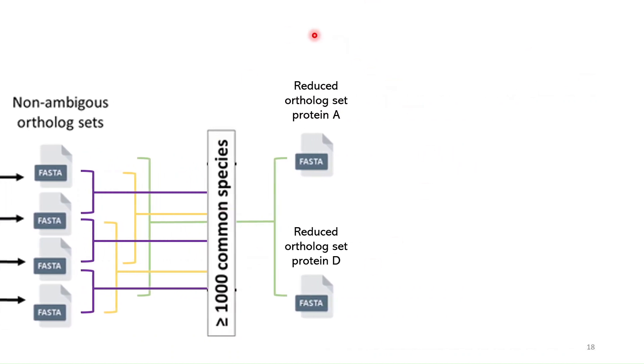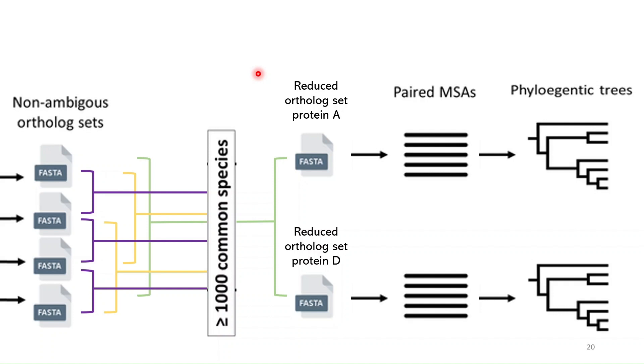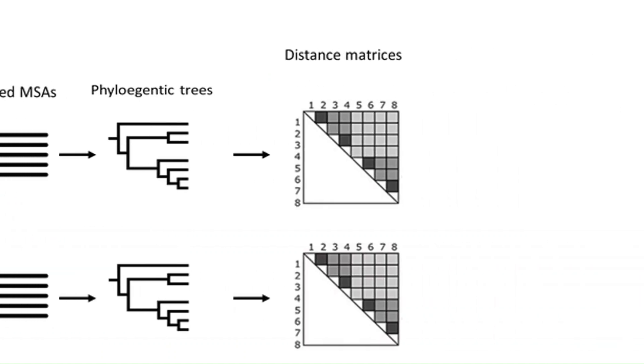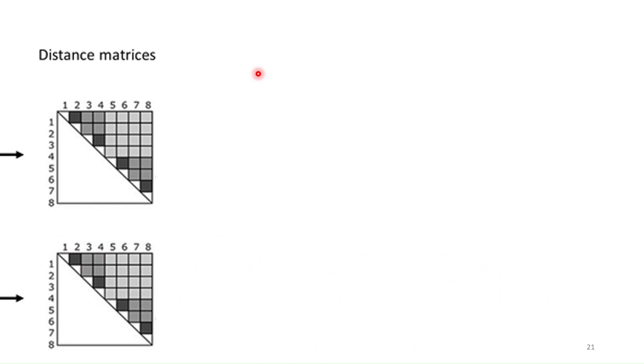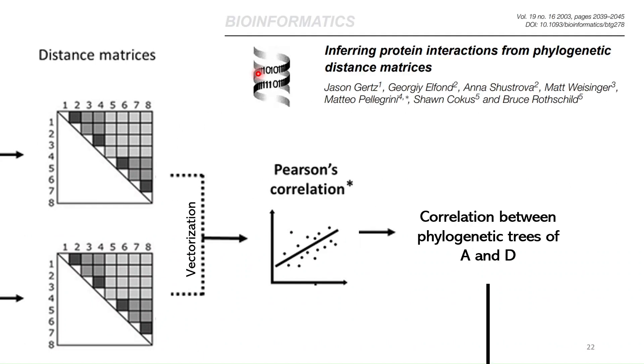So in this case we took these two proteins. They shared orthologs in this number of species, we reduce the ortholog sets, we align them and we build a phylogenetic tree out of it. The idea is that now we can make this phylogenetic tree into a distance matrix so that we can vectorize and compute the Pearson correlation between them. Now this Pearson correlation is essentially how similar these two phylogenetic trees are, so the higher the correlation the more similar the phylogenetic histories of these two proteins is.